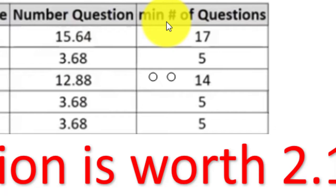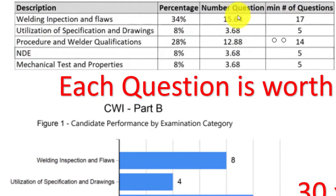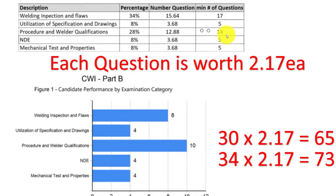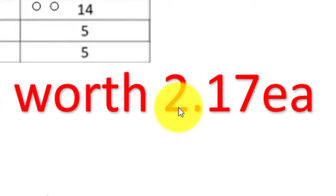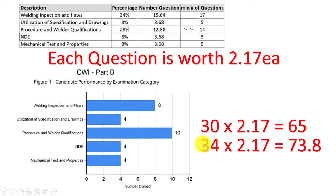In each one of these categories, for instance, welding inspection and flaws has 17 minimum. Utilization of specification and drawings has five. Procedures and welder qualifications has 14, and so on. Each question is worth 2.17 points each, so you have to get at least 34 right to pass.